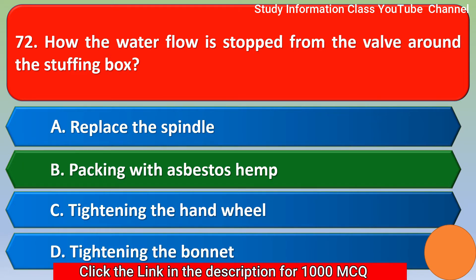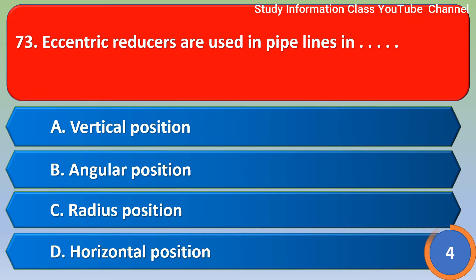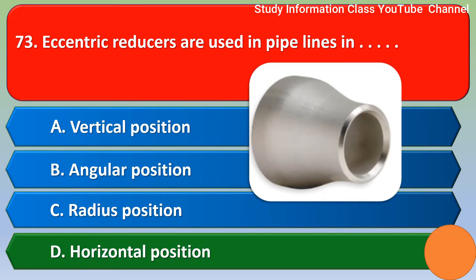Next question: Eccentric reducers are used in pipelines in which position? Option A: vertical position, Option B: angular position, Option C: radius position, Option D: horizontal position. The correct answer is Option D, horizontal position.